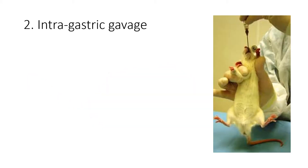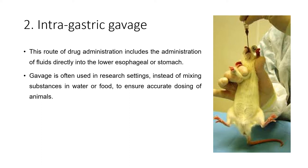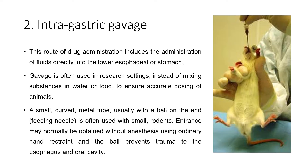The next is intragastric gavage. This route of drug administration includes the administration of fluid directly into the lower esophagus or stomach. Gavage is often used in research settings instead of mixing substances in water or food to ensure accurate dosing of the animal. A small curved metal tube, usually with a ball on the end — that is the feeding needle — is often used with small rodents.